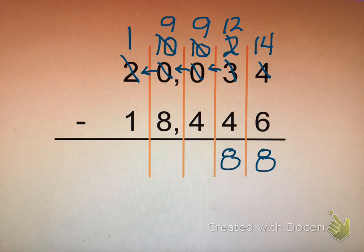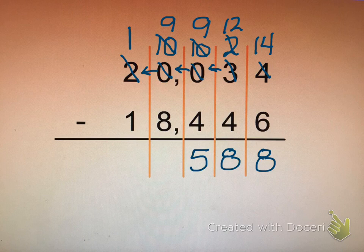Now in my hundreds place I only have nine. And nine take away four leaves me with five. In my thousands place nine take away eight leaves me with one. And in my ten thousands place one take away one is zero. But we know that we don't write our leading zeros. I'm going to take that off of there. My answer to this problem is one thousand five hundred eighty eight.